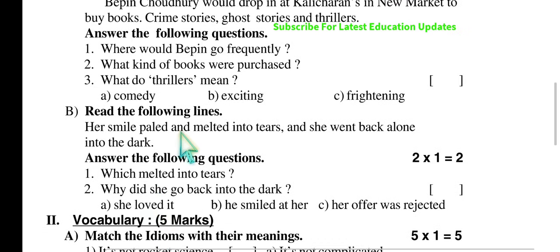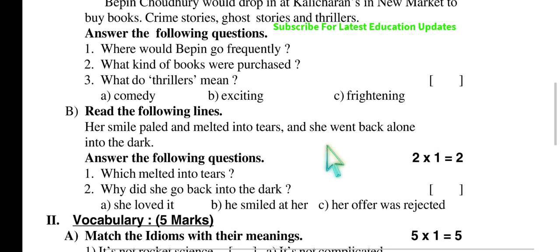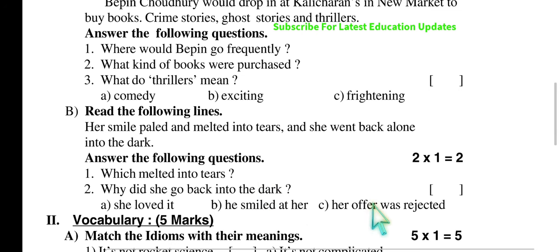The next reading passage states: 'Her smile paled and melted into tears and she went back home, she went back alone into the dark.' Questions include: what melted into tears, and why did she go back into the dark? Options include: loved it, smiled at her, or her offer was rejected. Please try to answer.